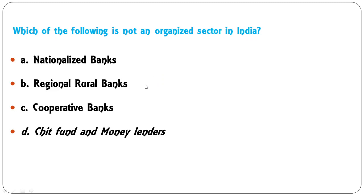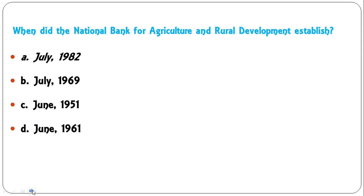Which of the following is not an organized sector in India? Options: nationalized banks, regional rural banks, cooperative banks, chit fund and money lenders. The correct answer is chit fund and money lenders — this is not part of the organized sector. All the other three are part of the organized banking and financial sector. So D is the correct answer.